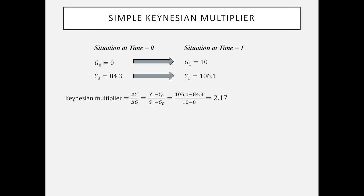We can look at the Keynesian multiplier in the following sense. At time 0, G₀ equals 0, then it becomes 10. Real GDP is 84.3 initially, it jumps to 106.1. So we can write the Keynesian multiplier as the change in real GDP due to the change in G, which is Y₁ minus Y₀ over G₁ minus G₀. The change in government purchases is 10. 106.1 minus 84.3, you can do the math, comes out to be 2.17.